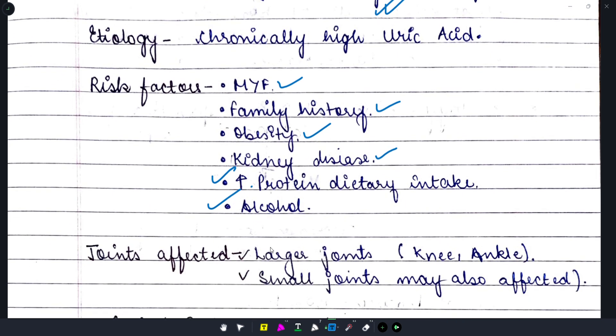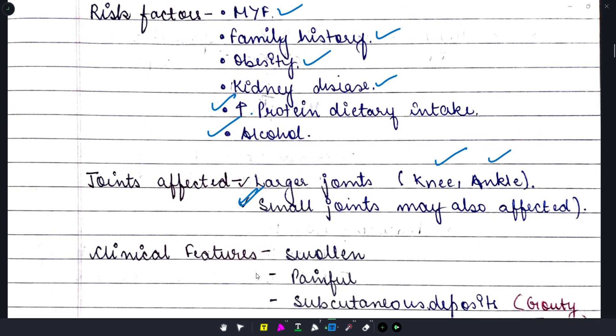Regarding joints affected: larger joints are more commonly affected, for example the knee joint and ankle joint. Sometimes smaller joints are also affected. Now we come to clinical features.